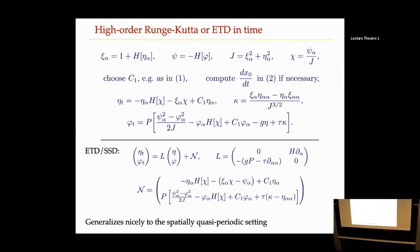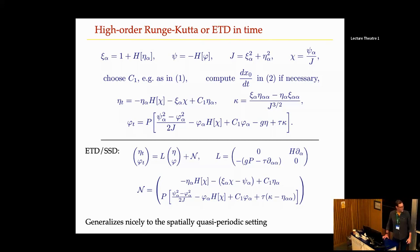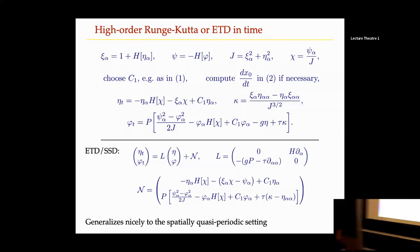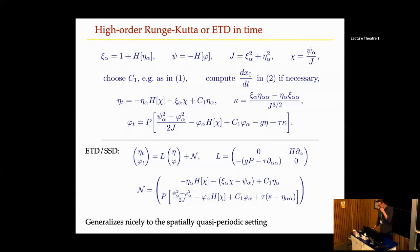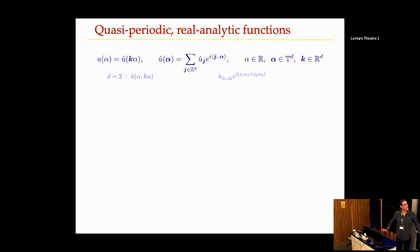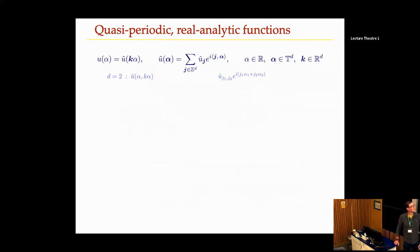A really nice feature of the conformal mapping approach is that it generalizes to the spatially quasi-periodic setting, because the Dirichlet-Neumann operators have been turned into Hilbert transforms, which work fine for functions with multiple periods. A quasi-periodic function u is a function of one variable alpha — which runs over the whole real line — obtained by evaluating a torus function U-tilde along some characteristic direction within a higher-dimensional torus.